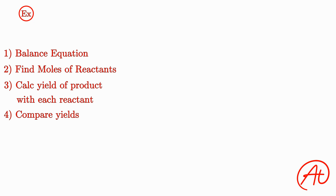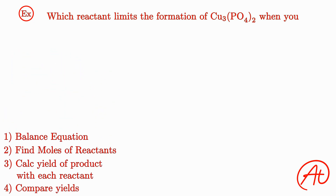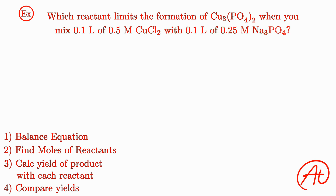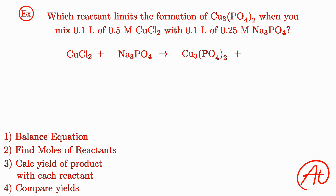This time, let's figure out which reactant limits the formation of copper phosphate when you mix 0.1 liters of 0.5 molar copper 2 chloride, CuCl2, with 0.1 liters of 0.25 molar sodium phosphate, Na3PO4. Let's write out our equation. We have CuCl2 mixing with Na3PO4 to create Cu3(PO4)2, but we also have one more product. Just like copper went with the phosphate on the product side, Na will go with Cl, giving us our other product of NaCl.